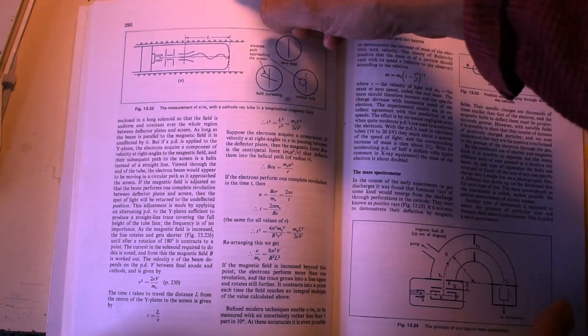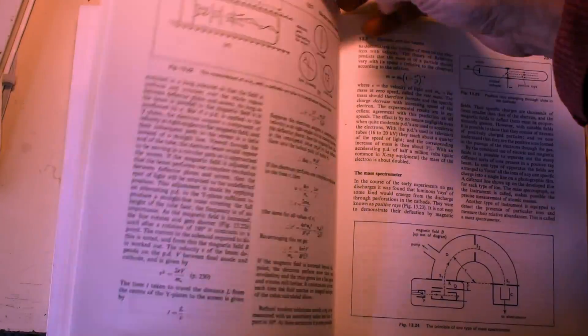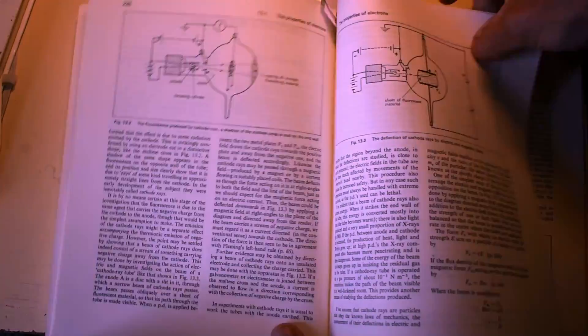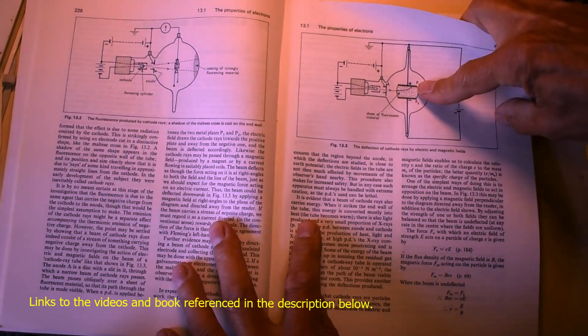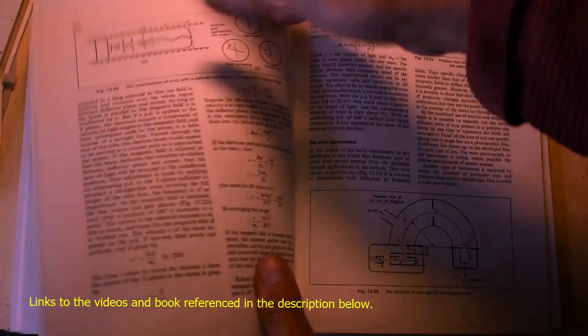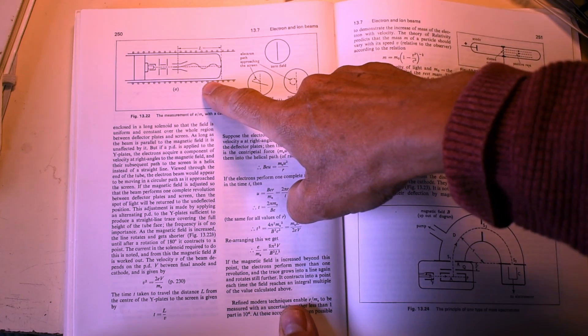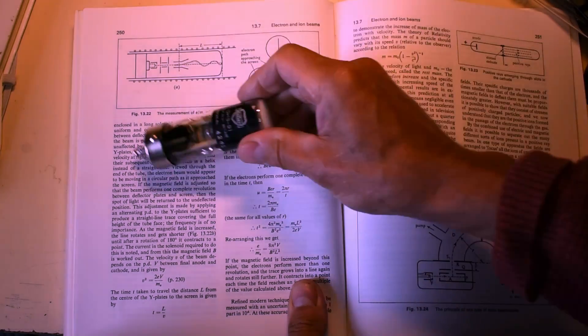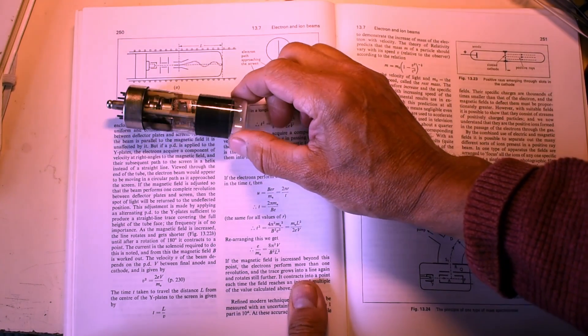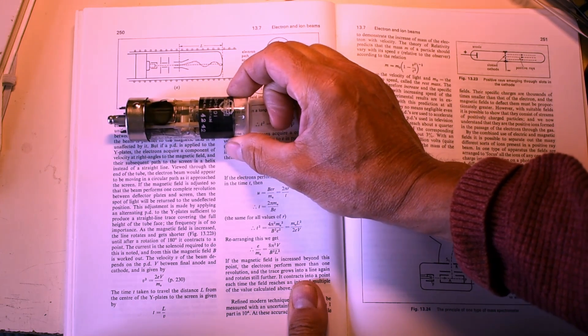This is normally done with an experiment I already looked at previously using an educational CRT like this one, but this one is using an ordinary oscilloscope CRT. The one here is actually, I think this is what they've got in mind, a very small oscilloscope tube.